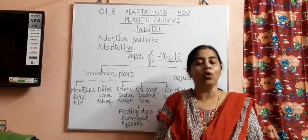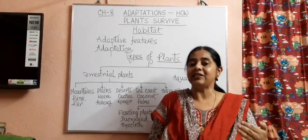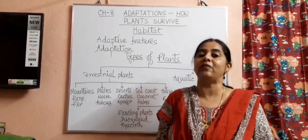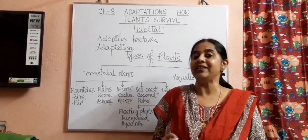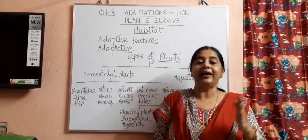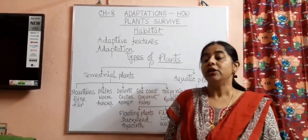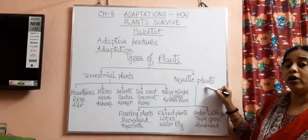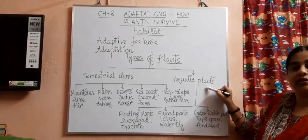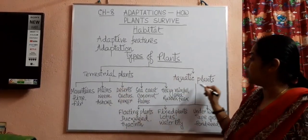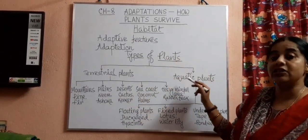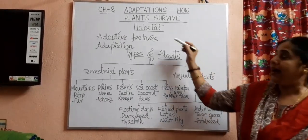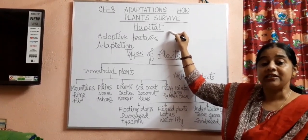On the earth's surface, as there are different climatic conditions, there are different adaptive features of different plants to survive. Our earth's surface is divided into two parts: land and water. Plants which live on land are known as terrestrial plants, and plants which live in or on water are known as aquatic plants. These two types of plants adapt to their habitat and survive on the earth.